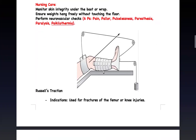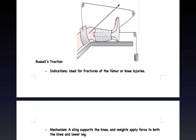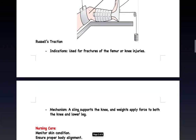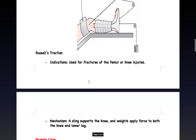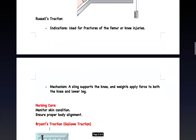Russell traction looks like Buck's traction — there's a strap and weight at the lower pulley on the skin — but it has an additional sling above the knee providing a pulley effect. Buck's traction is used for femoral and hip fractures; Russell traction is used for femoral or knee fractures. The sling supports the knee while the weight hangs freely to the lower leg and boot, pulling the femur while simultaneously supporting the knee. Nursing care is the same: check skin integrity, proper alignment, and ensure weights are above the ground.